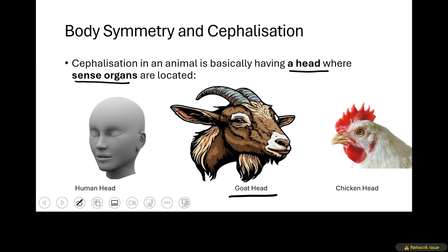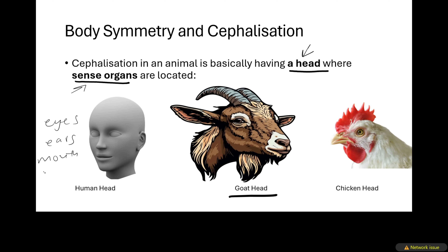So let us talk about cephalization. What is cephalization in these organisms? Cephalization in an animal is basically the presence of a head. When an animal has got a head, it has cephalization. This head must have sense organs — we're talking about the eyes, the ears, the mouth, the nose — all of those things that satisfy the five senses that we have.